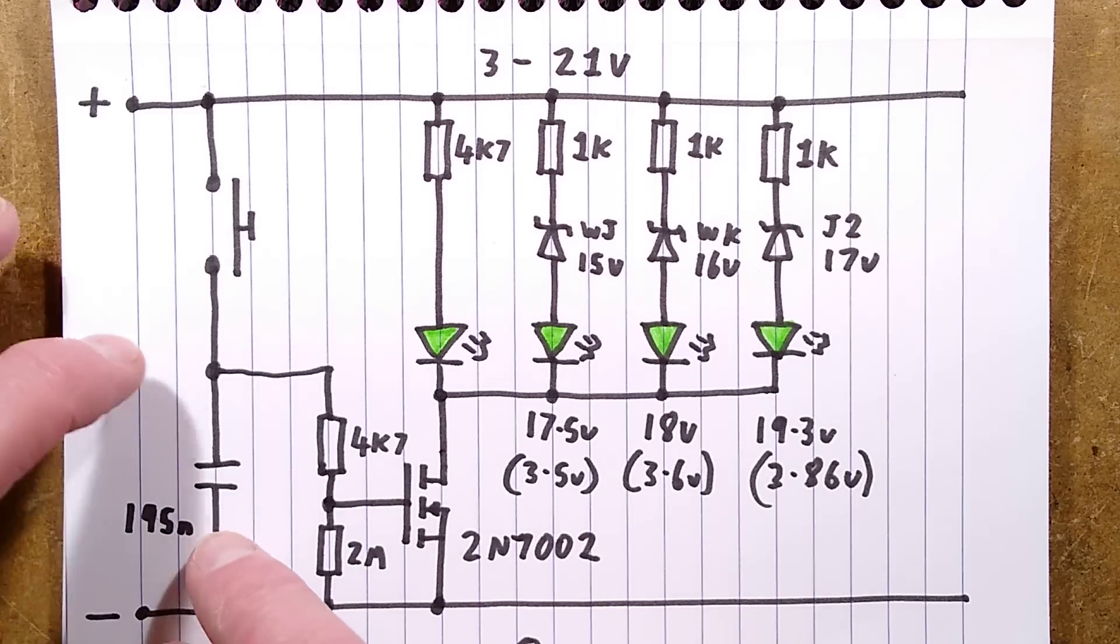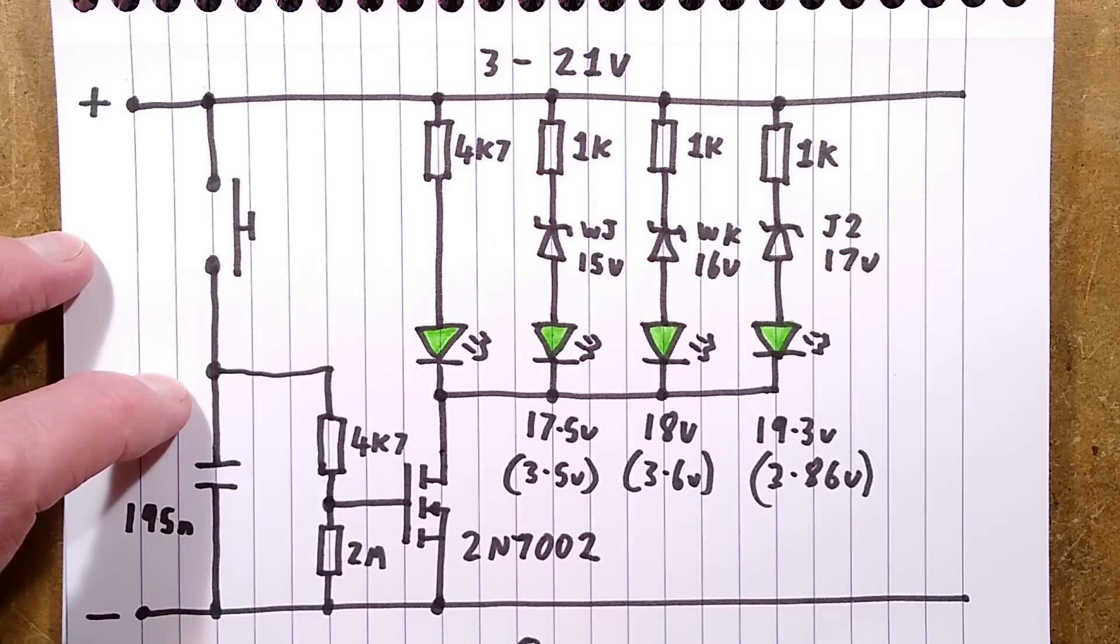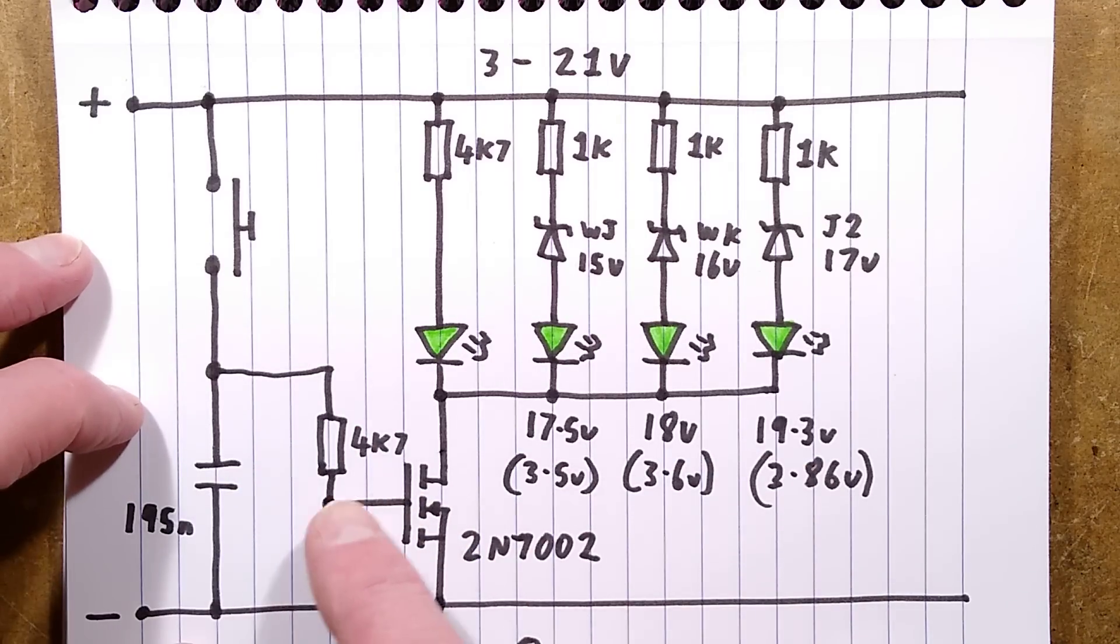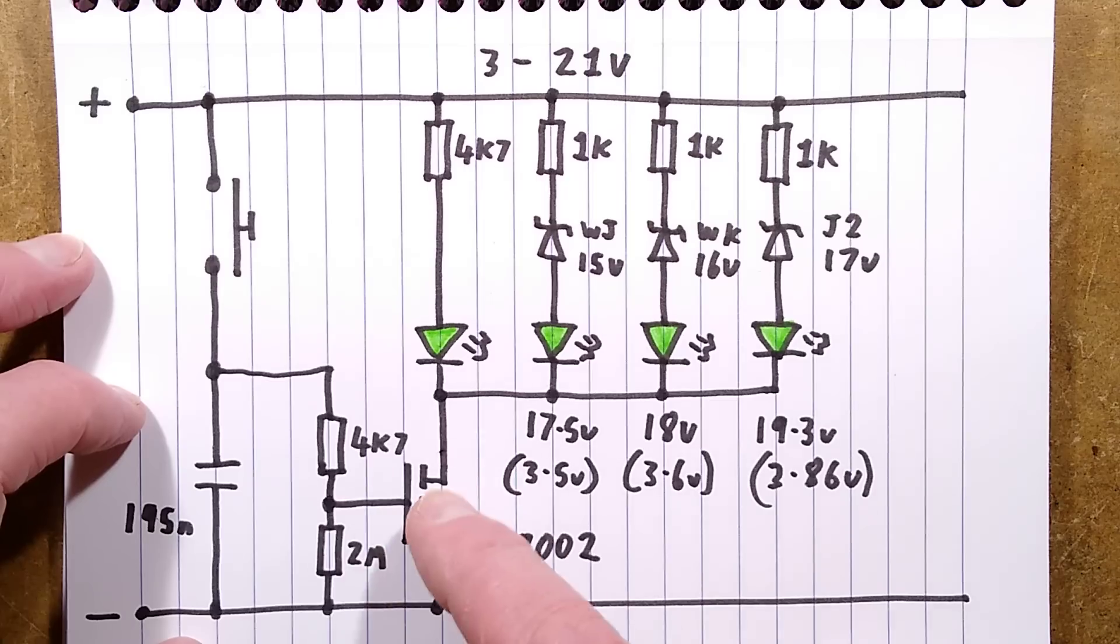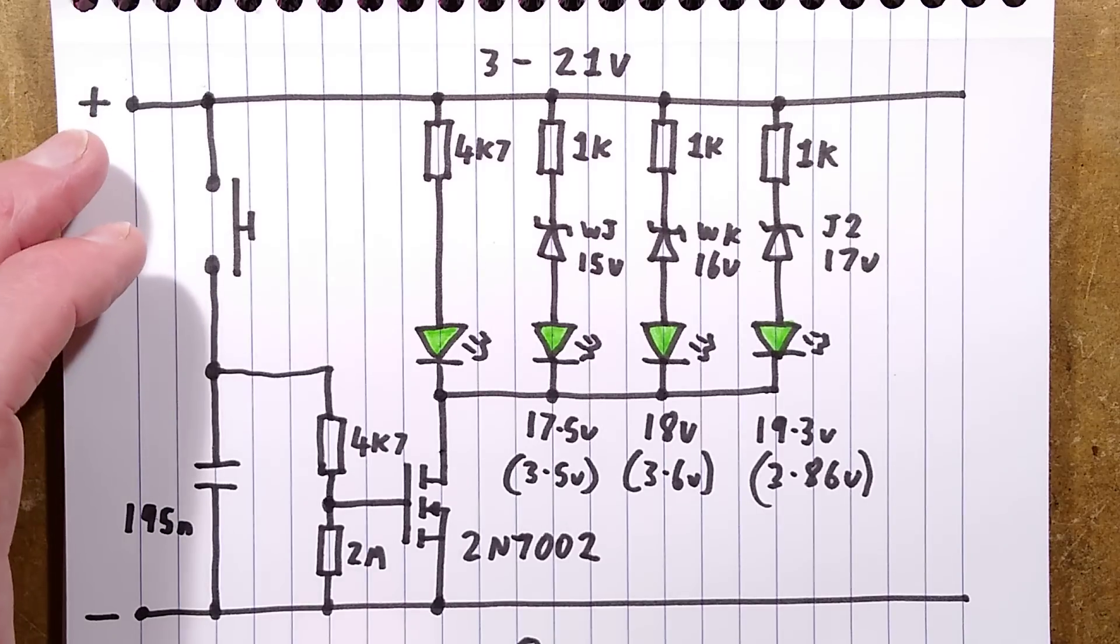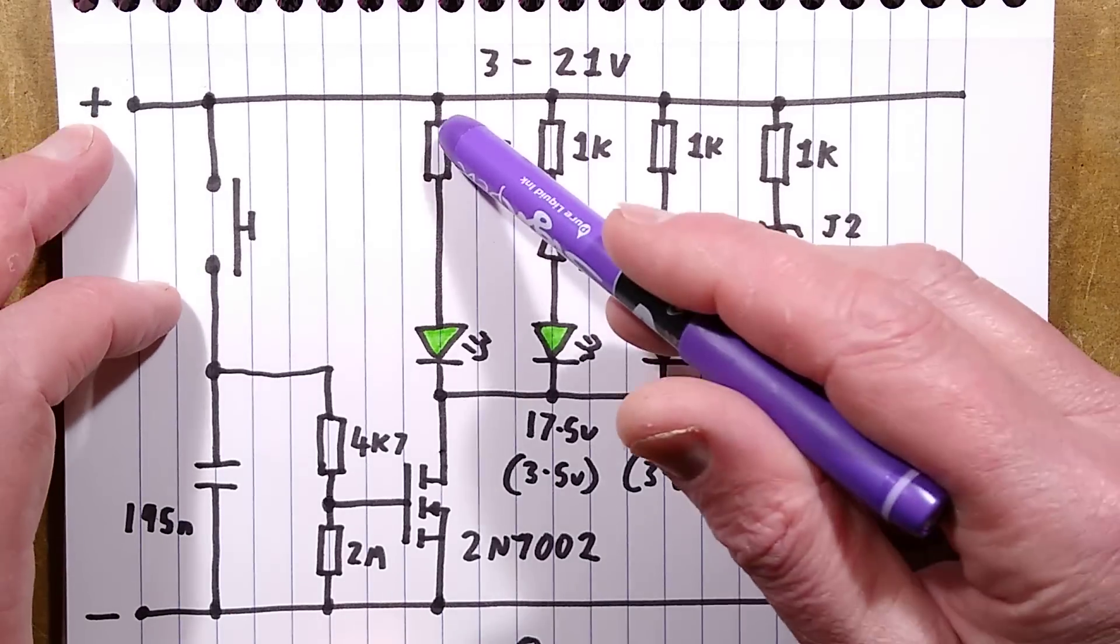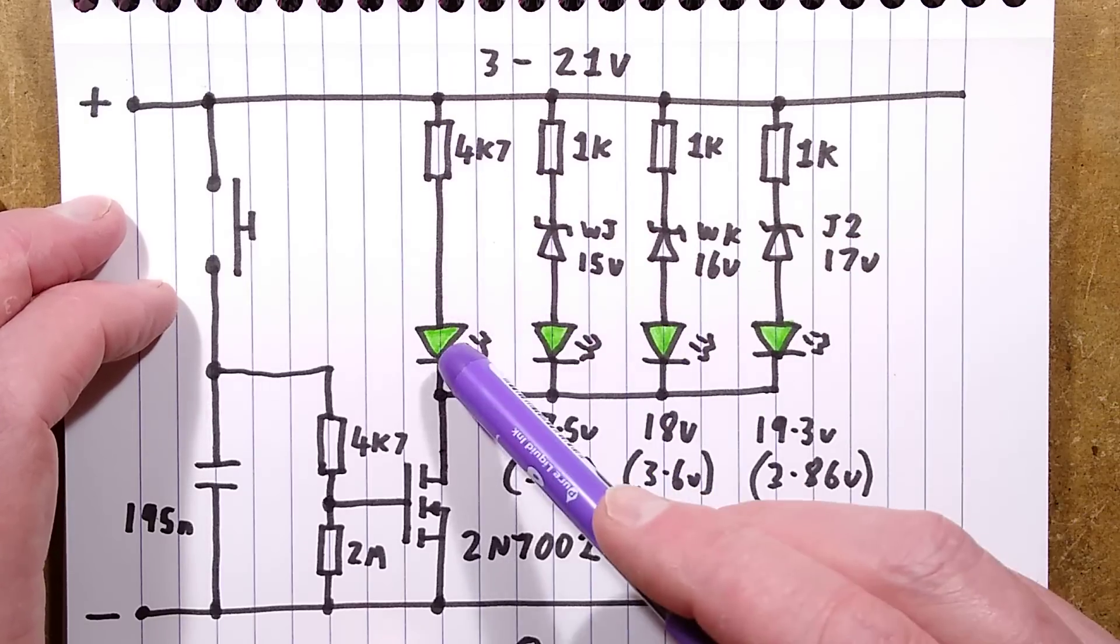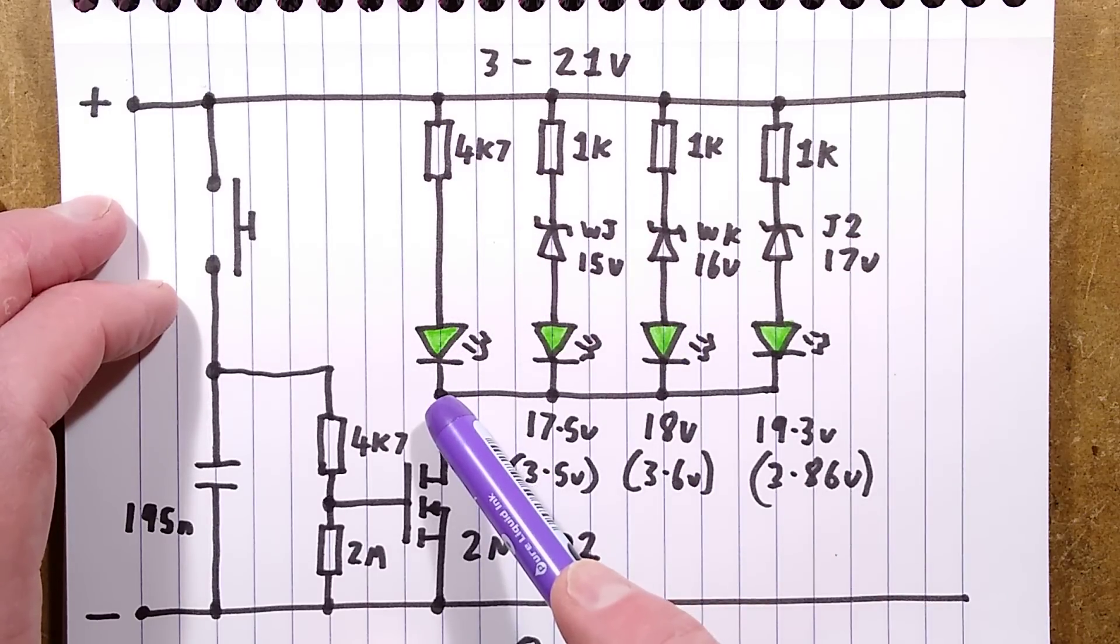Once that capacitor has been charged up by pushing that button it pulls the gate high, and then it slowly gets discharged via this two megaohm resistor until it's not enough to keep the MOSFET turned on, and then it turns off. It's a super simple time delay switch. There's the first LED with its 4k7 resistor, 4,700 ohms, and that lights from about 2.5 volts upwards.